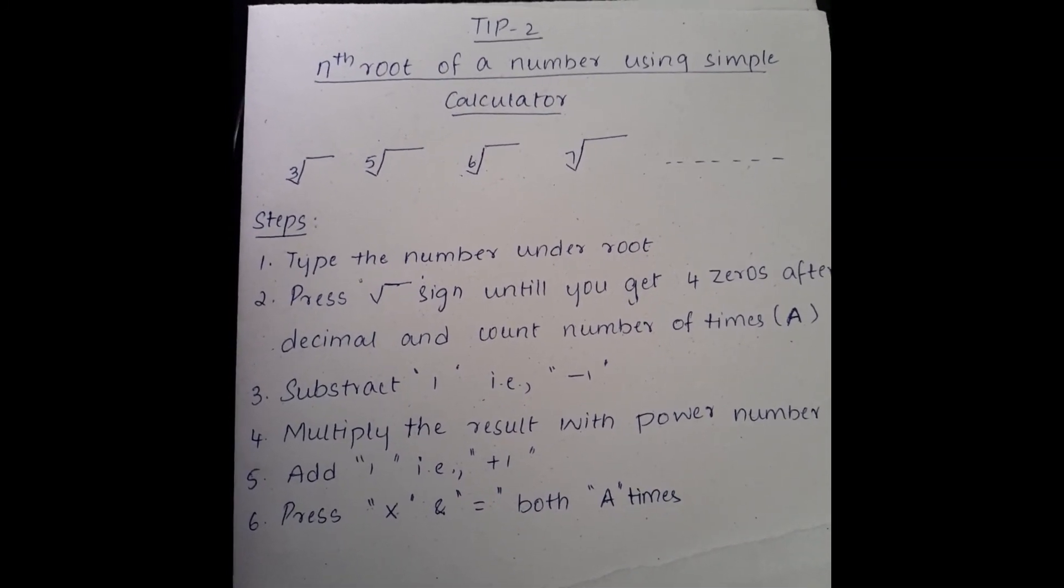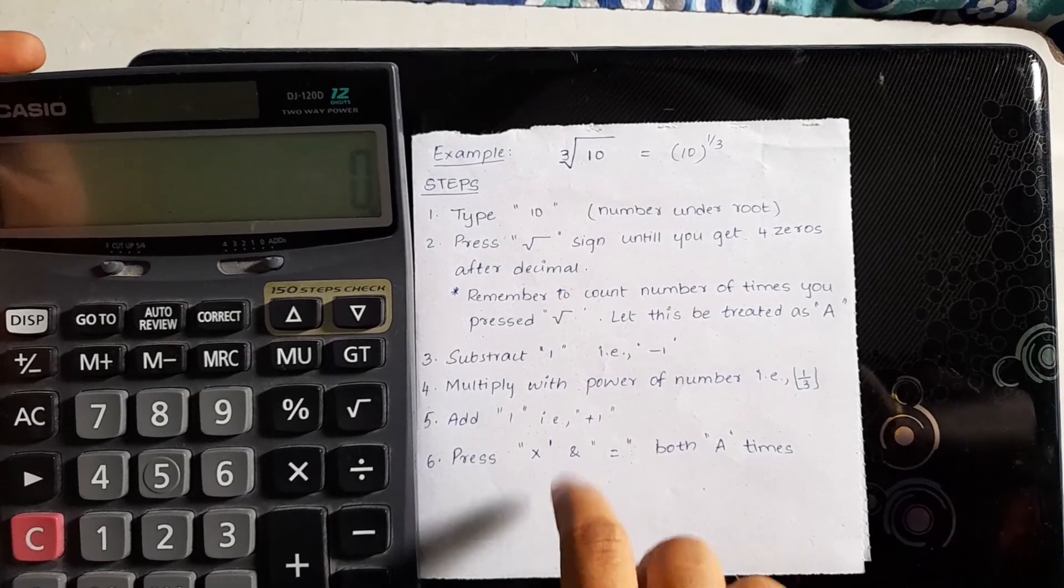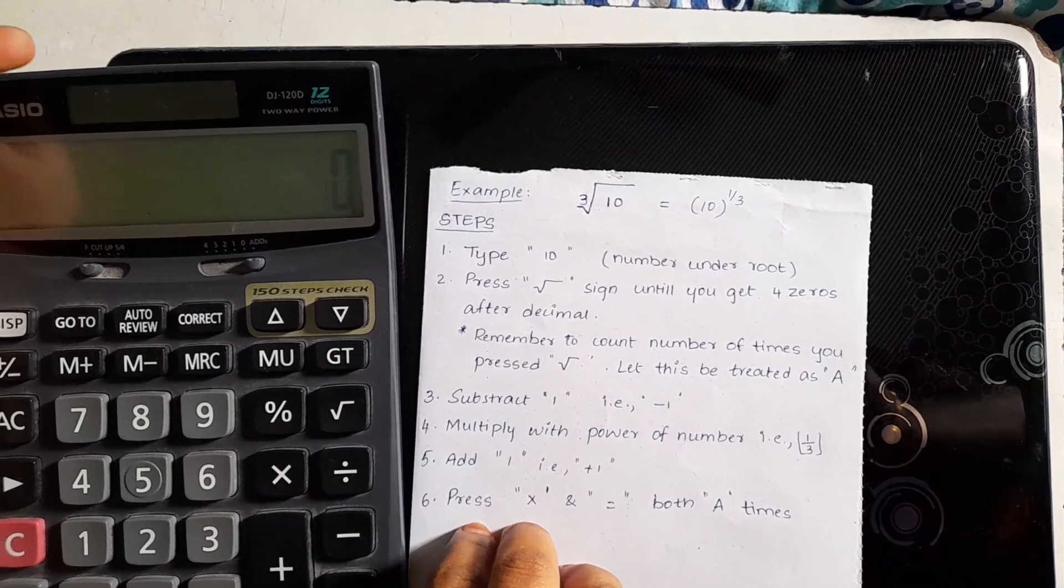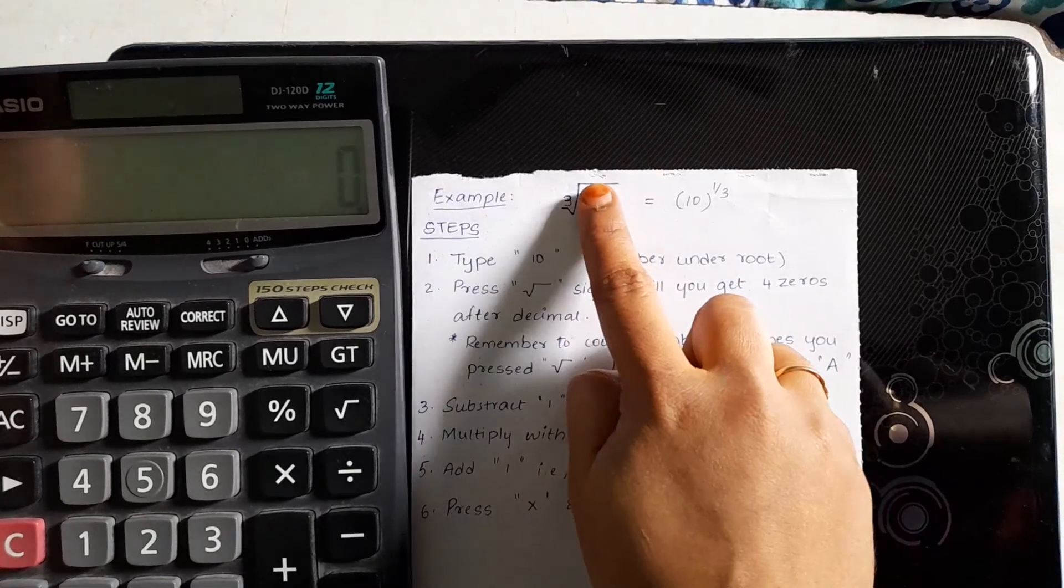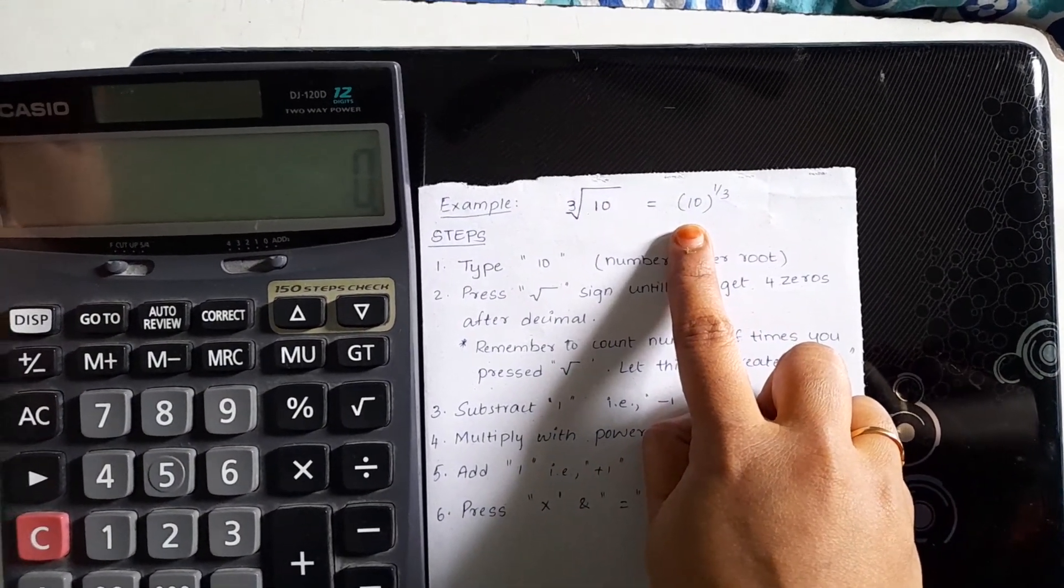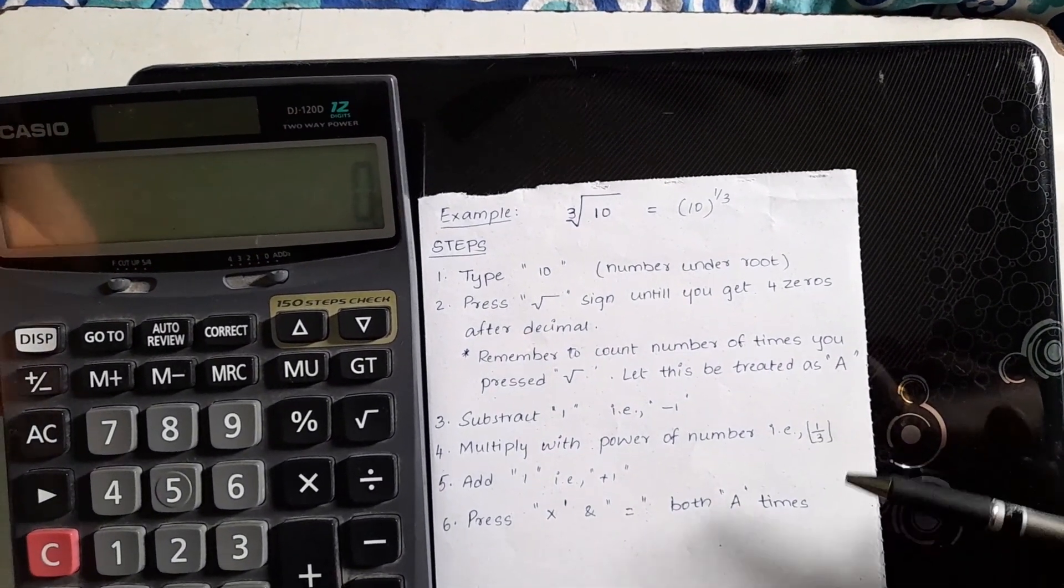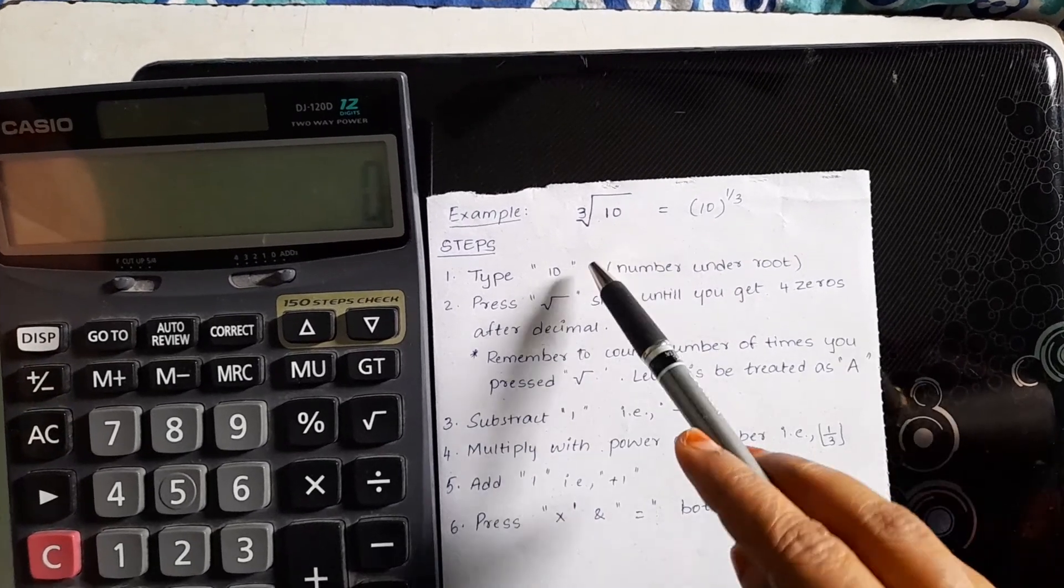Come, let's understand it using a simple example. Here is an example for you. In this example, we have taken cubed root of 10. That is, 10 power 1 by 3. Let's follow the simple steps which we have learnt and let's find out the result of this cubed root.